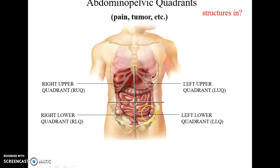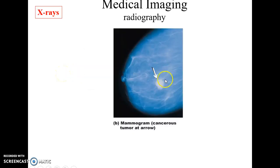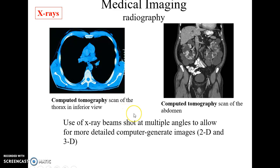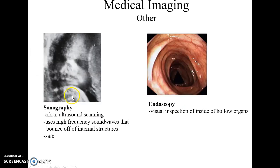Medical imaging begins with radiography, which uses x-rays and is typically two-dimensional. It can be used for sensitive imaging such as mammograms to detect breast cancer, and contrast substances can be added to visualize soft structures. Computed tomography (CT) uses x-rays taken from many angles with computers to produce impressive views inside the body. Magnetic resonance imaging (MRI) uses magnetic fields to look inside the body. Sonography uses ultrasound scanning, and endoscopy uses light — all amazing tools for medical imaging.